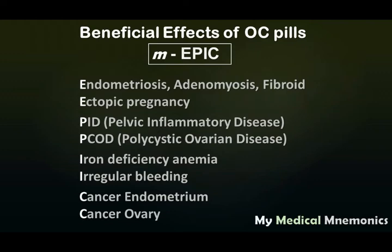P covers PID and PCOD as key indications. I stands for iron deficiency anemia and irregular bleeding. OC pills help avoid excess bleeding during menstruation, thereby preventing iron deficiency anemia, and they help regulate irregular bleeding rather than causing it.